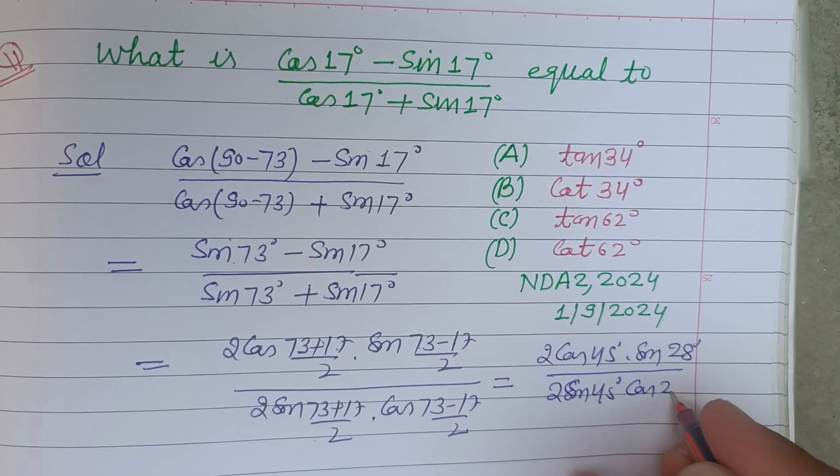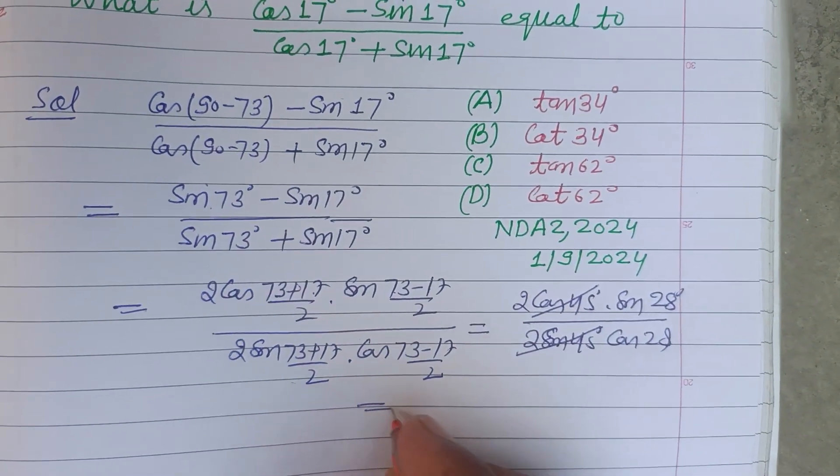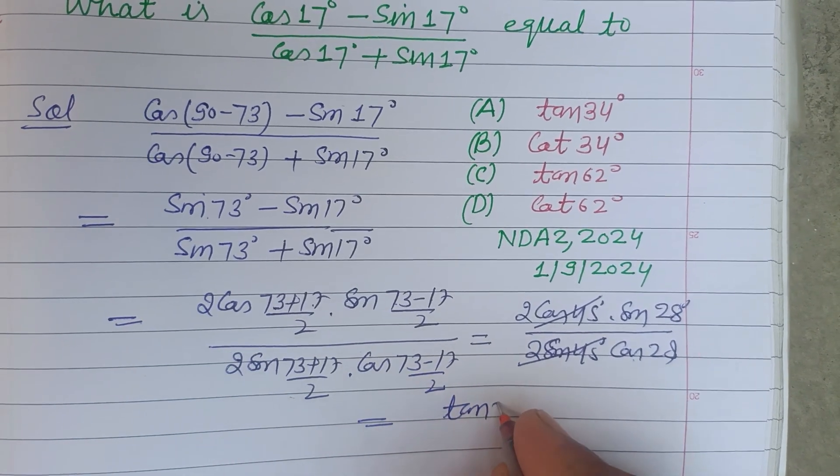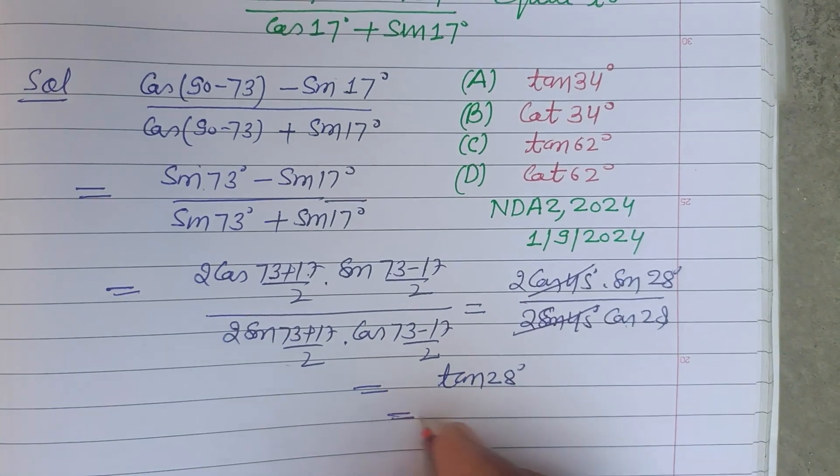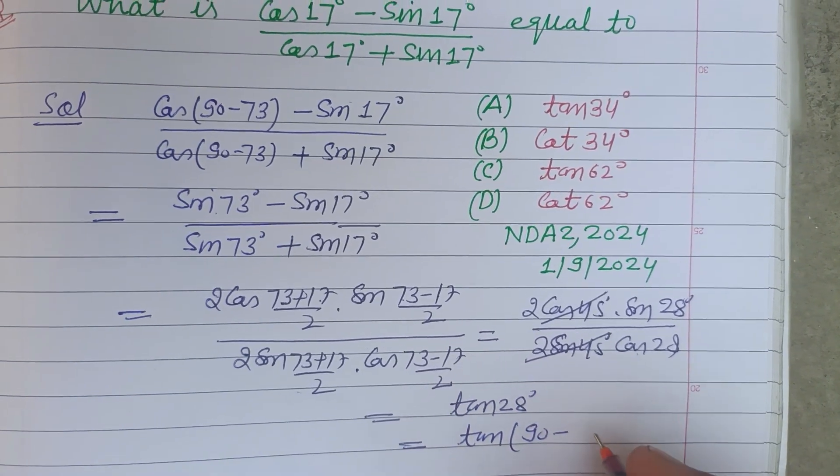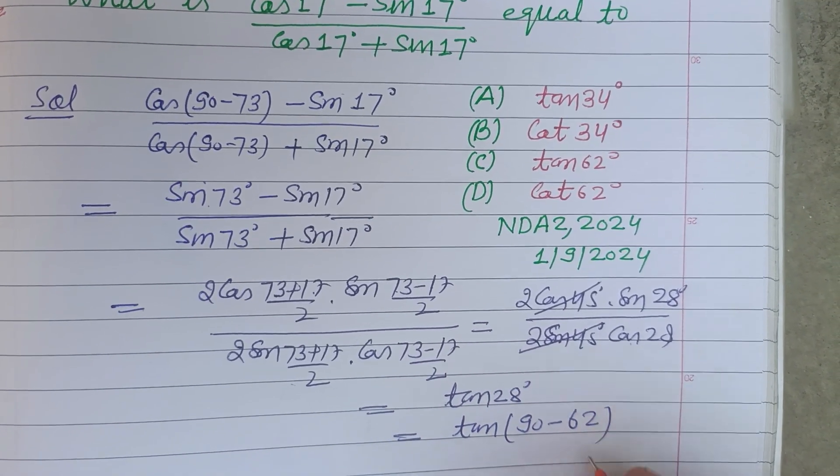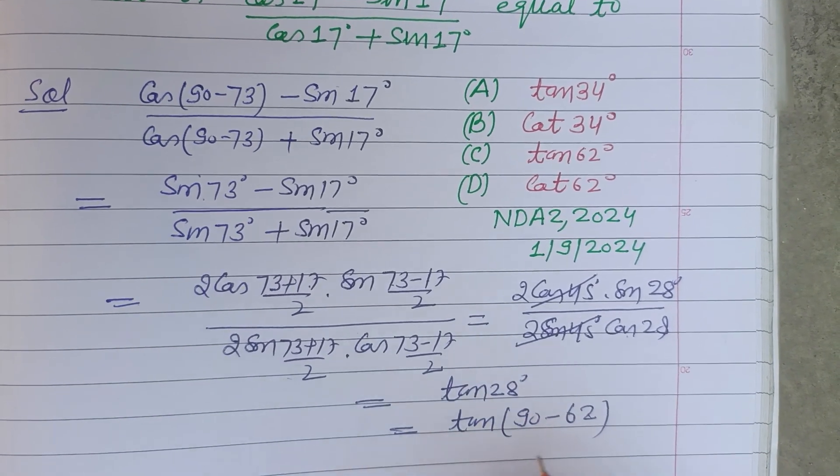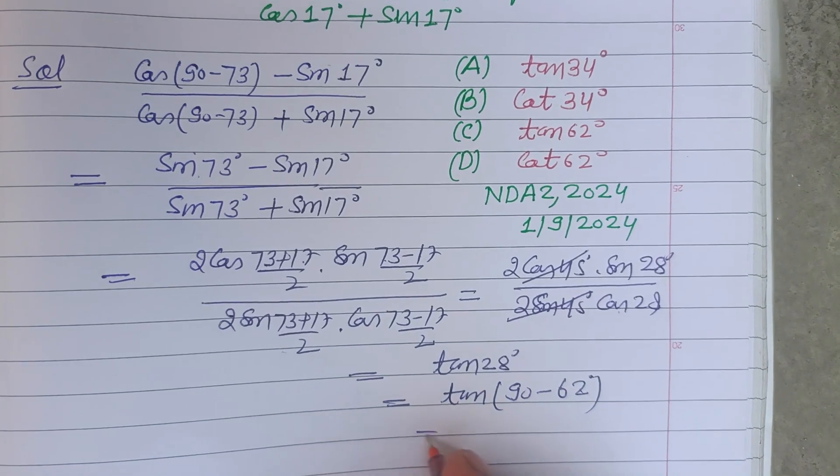So this is cancel out, we got sin 28° upon cos 28°, this is tan 28°. Now tan 28° can be written as tan(90° - 62°) which is tan θ to tan(90° - θ).